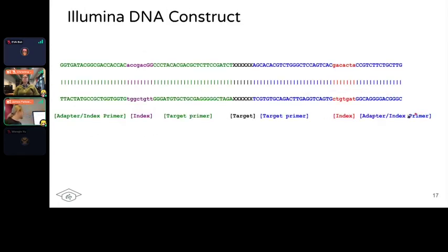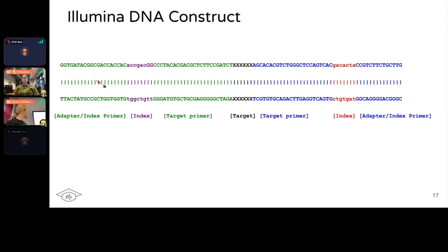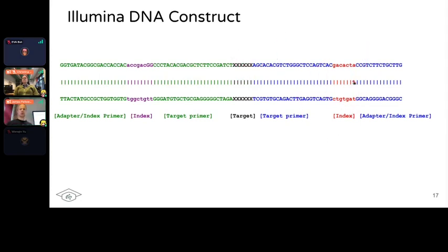Going into a bit more detail: this is an example Illumina DNA construct. You have your actual template molecule — the DNA from your sample — and at either end you have the adapter and index primer. The adapter is complementary to the synthetic oligos on your flow cell. You have an index, which is the sample-specific barcode. The adapter also includes a primer for sequencing the index itself, because you also have to sequence the barcode to have that information for demultiplexing. Then you have the priming site for the polymerase for the target molecule, and the same at the other end.